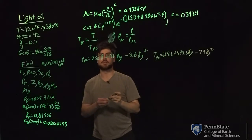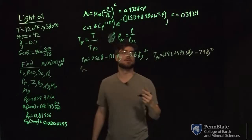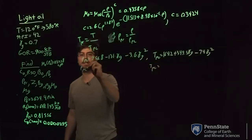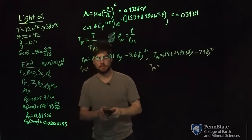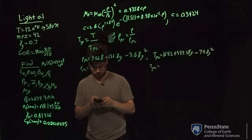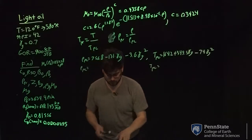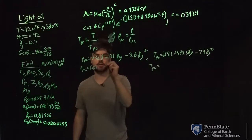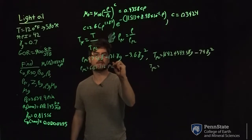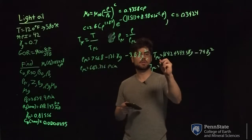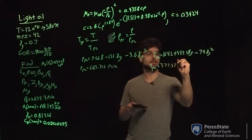So our specific gravity of gas is 0.7. PPC will equal 663.336 psia. TPC will equal 377.59 Rankine.